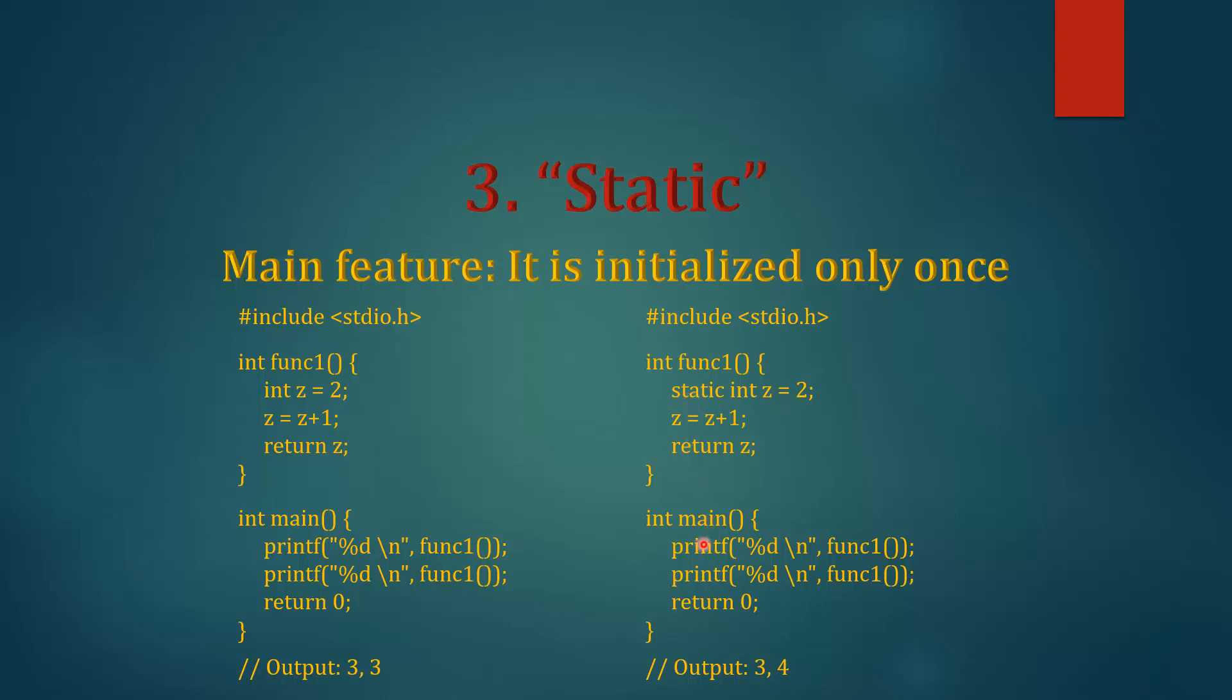So first of all, it will be called for the first time and it will print 2 plus 1, which is 3, right? But next time, since its main feature is it is initialized only once, so when it will be called next time, it will not be initialized again. The Z will not be equal to 2. It's already has been initialized, so it will retain its previous value. So Z is already equal to 2 and it has been incremented already also, so current value is 3. So in the second call, the new value of Z will be 3 plus 1, which is 4, and it will output 4. So this was static keyword.